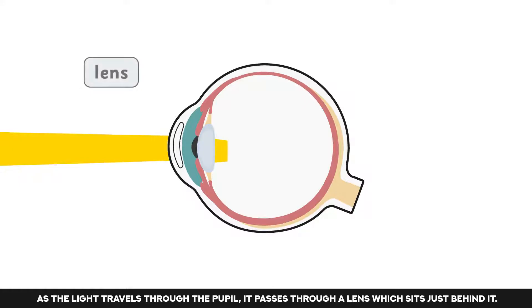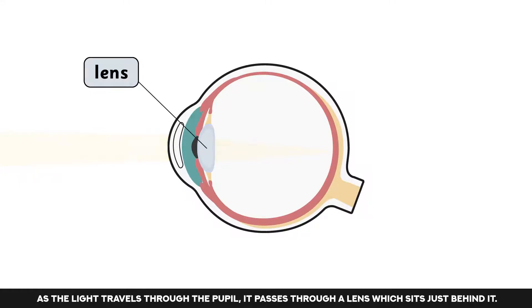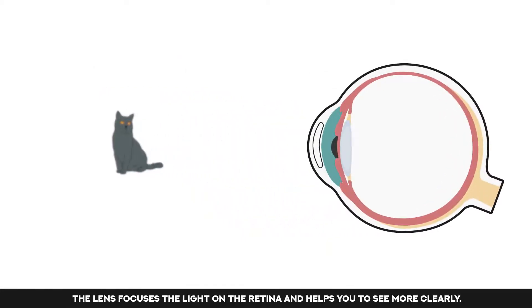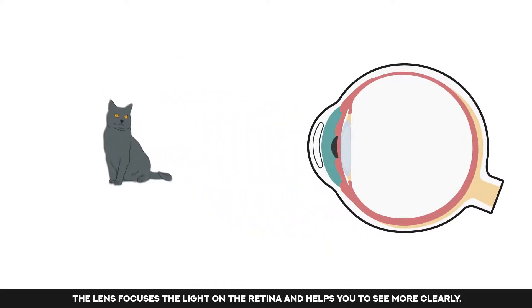As the light travels through the pupil, it passes through a lens which sits just behind it. The lens focuses the light on the retina and helps you to see more clearly.